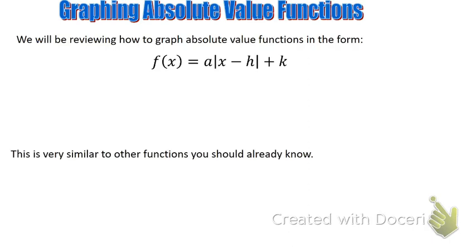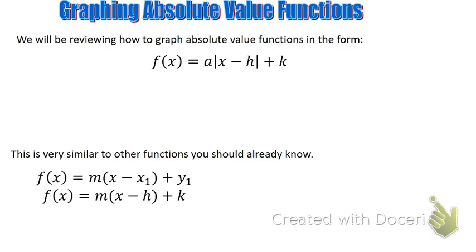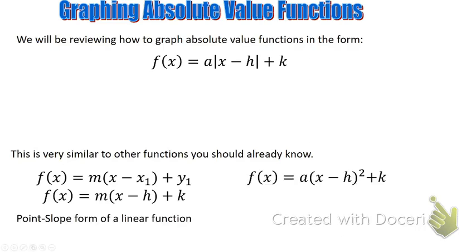Now this should look very familiar — we've seen something very similar to this. We've seen the form f of x equals m times the quantity x minus h plus k, or f of x equals m times the quantity x minus x1 plus y1, which is point-slope of a line. We've also seen f of x equals a times the quantity x minus h squared plus k, which is the vertex form of a quadratic function.